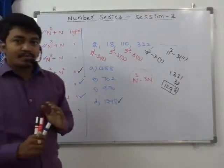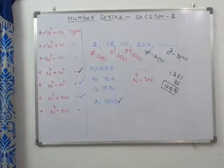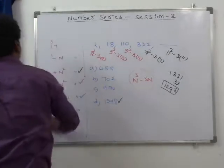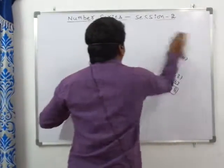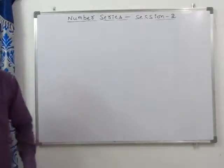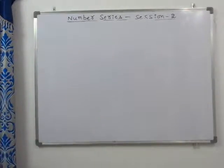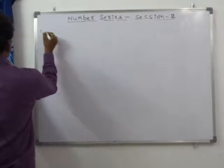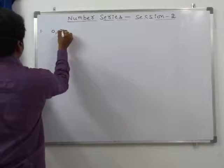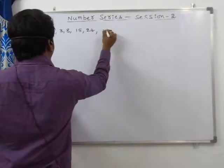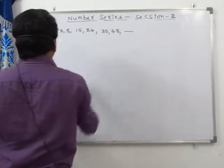These are 7 types of advanced number series questions. Next we will see some extra practice questions. Question 1: 0, 3, 8, 50, 24, 35, 48 — what is the next number?